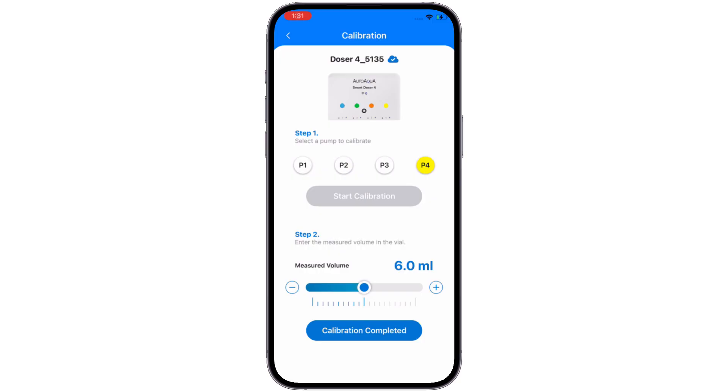Once smart doser has finished its calibration dose, enter the exact volume into the app by sliding the measured volume bar, or click the plus or minus icons.